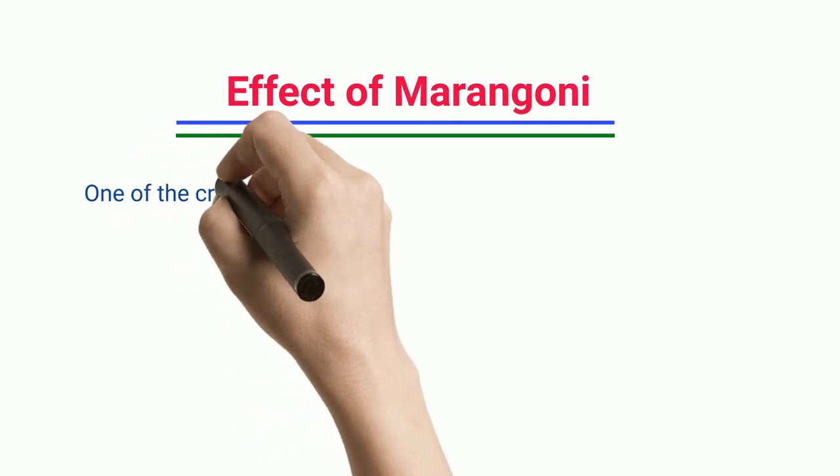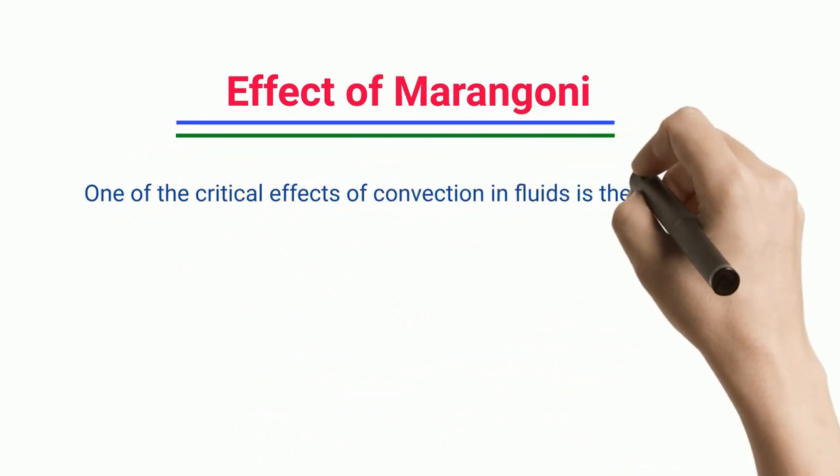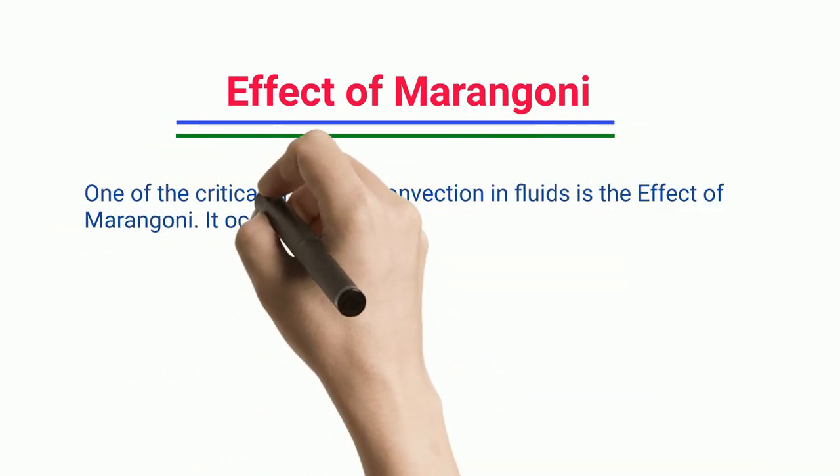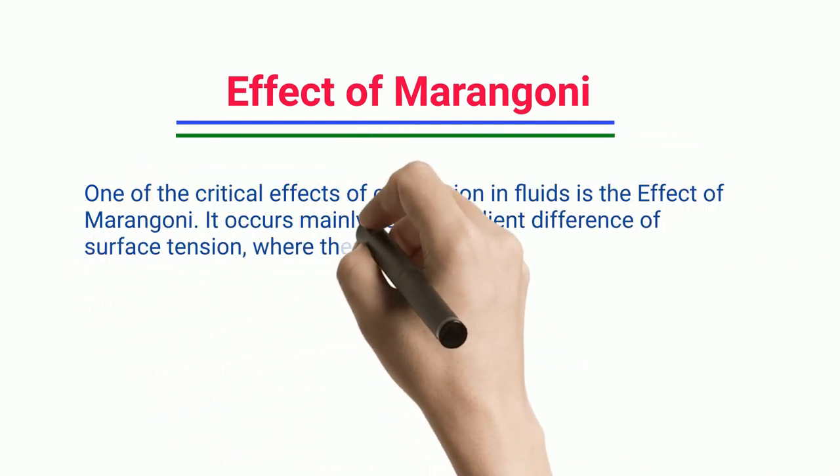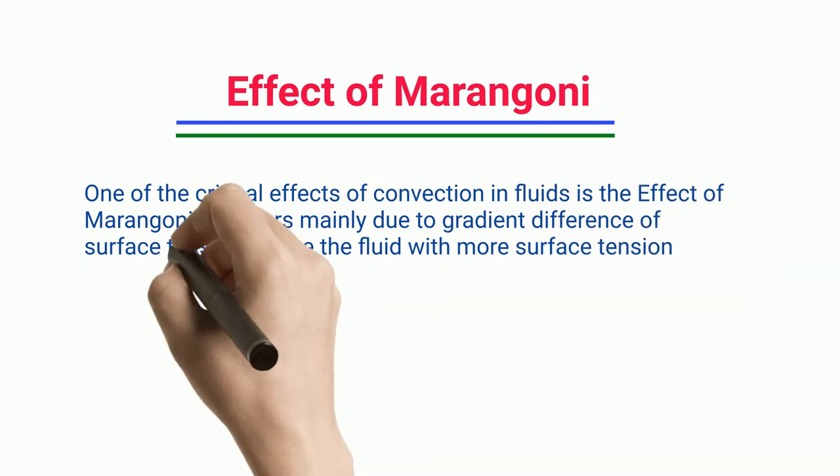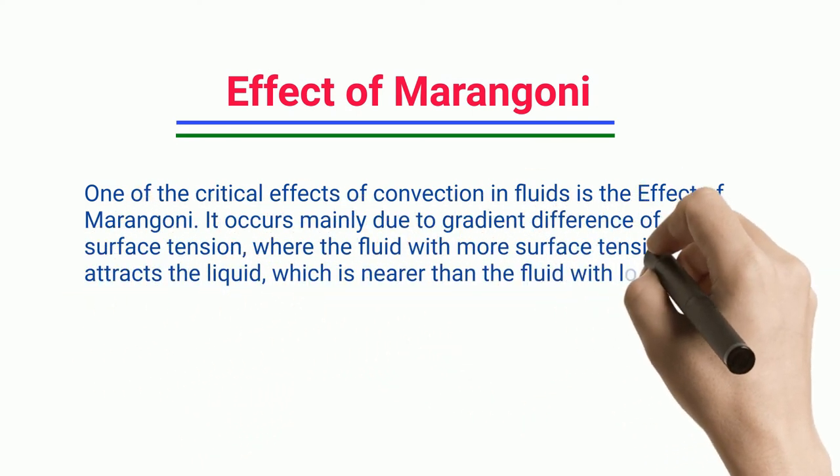Effect of Marangoni: One of the critical effects of convection in fluids is the effect of Marangoni. It occurs mainly due to gradient difference of surface tension, where the fluid with more surface tension attracts the liquid, which is nearer than the fluid with low surface tension.